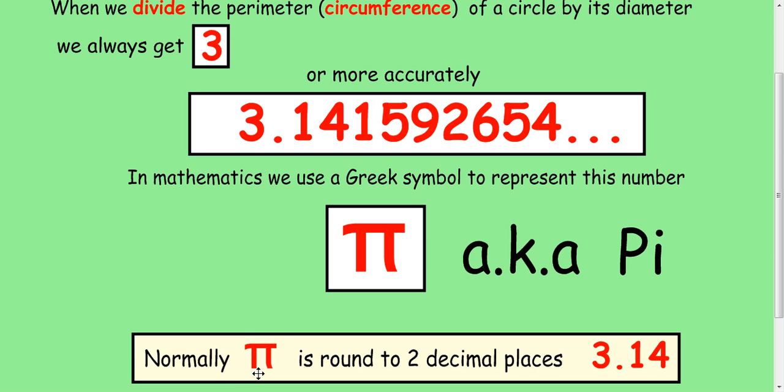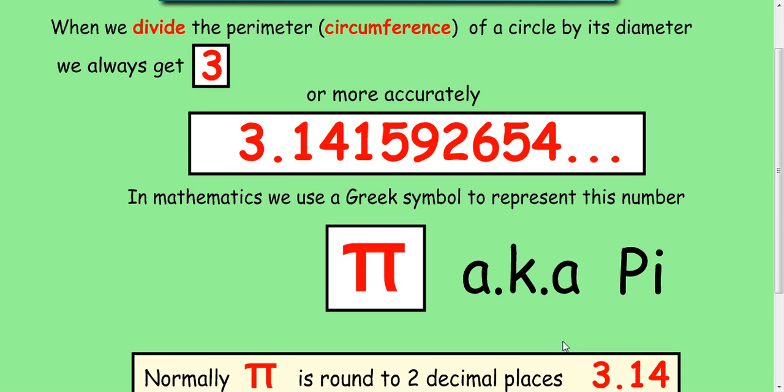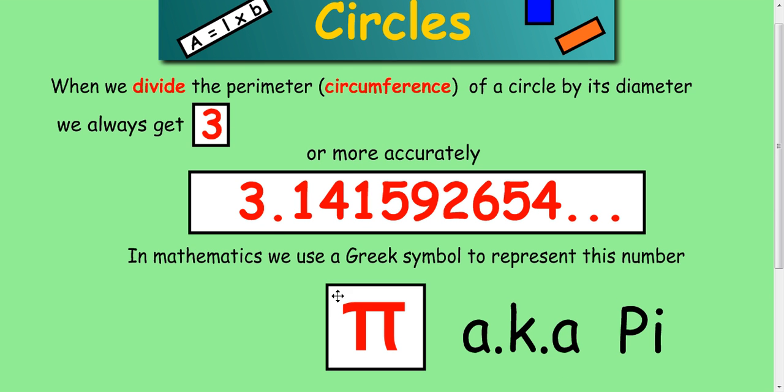Okay, so when we're using pi, it's normally rounded to 3.14. You can hit the pi button in your calculator and it will give you the full digits, and it's a bit more accurate when you do that, but you don't need to.